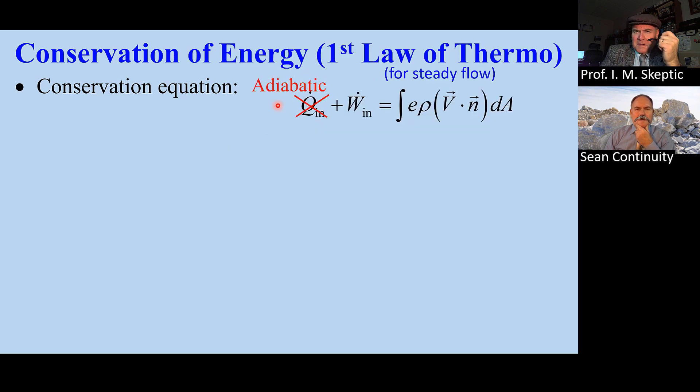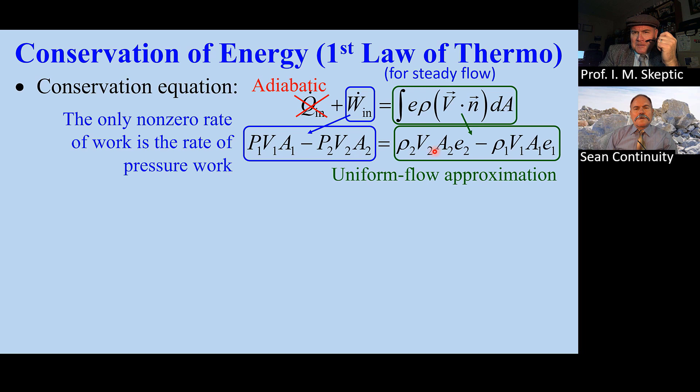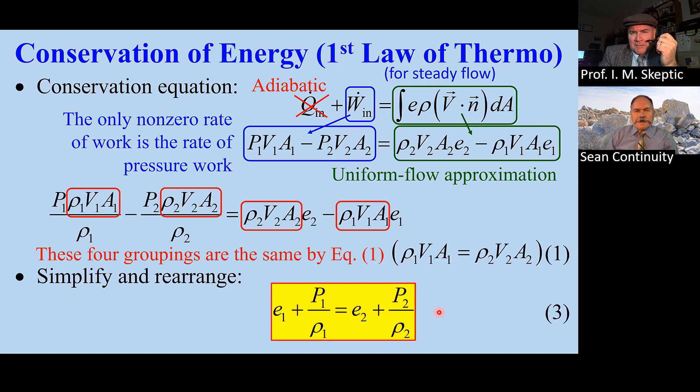Now we use the first law for steady flow. It's adiabatic. The only non-zero rate of work is the rate of pressure work. We get these two terms at the inlet and outlet. This integral reduces to these two terms. By equation 1, these four groupings are the same. We simplify to equation 3: E + p/ρ = constant.